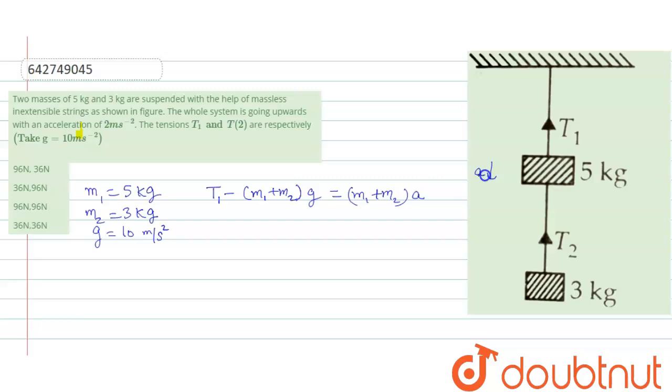And we will write for T2: T2 minus m2 g equal to m2 a.